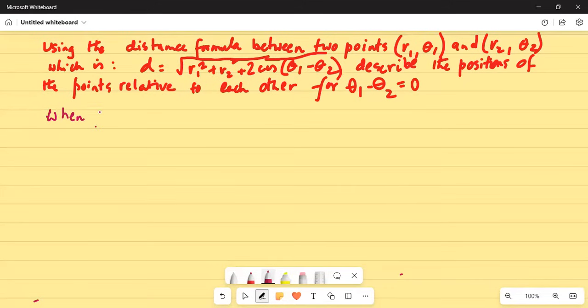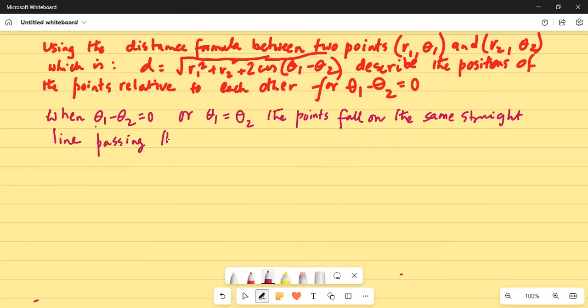When theta1 minus theta2 equals zero, or theta1 equals theta2, the points fall on the same straight line passing through zero zero.